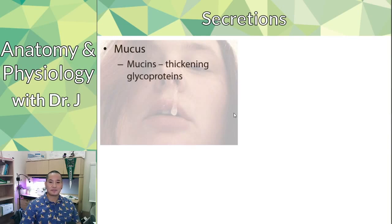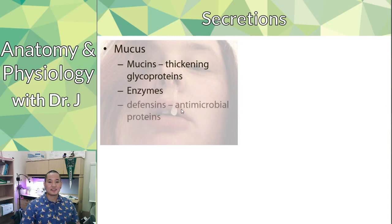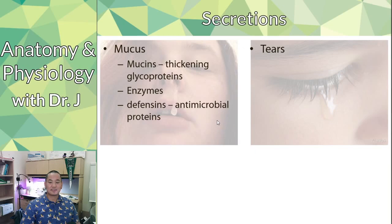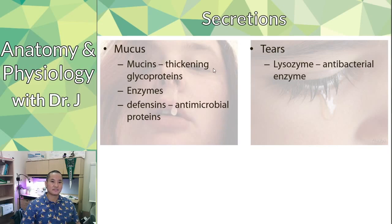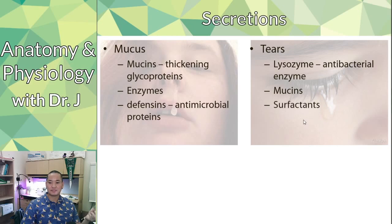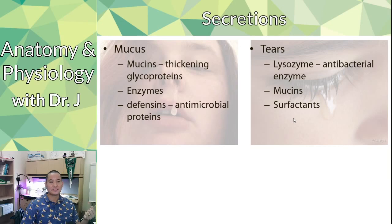Mucus is a secretion we're all familiar with. It contains mucins, which are thickening glycoproteins, along with enzymes and defensins. Tears are also a secretion with antimicrobial properties — they contain lysozyme, an enzyme that creates a hostile environment for bacteria. Tears also have some mucins, though not as thick as nasal mucus, as well as surfactants that help tears spread across your eyes and dissolve lipids.